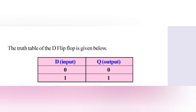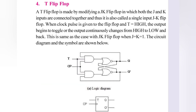In the microprocessor, we use the T flip-flop. The T flip-flop is essentially a JK flip-flop with the J and K inputs connected together.